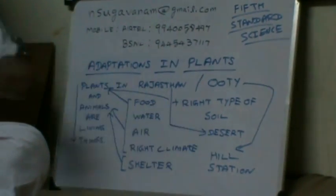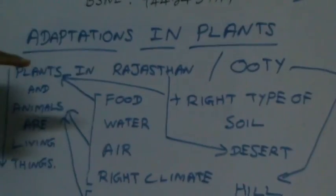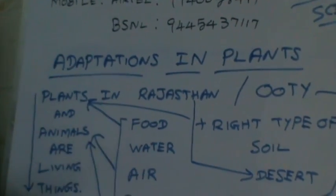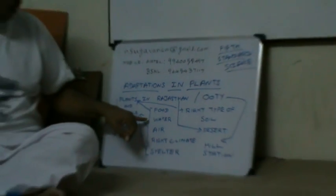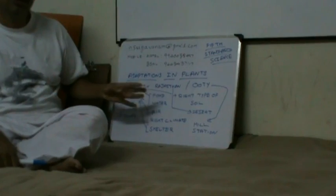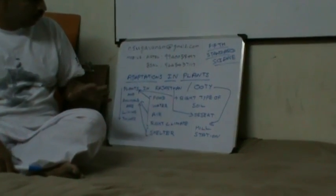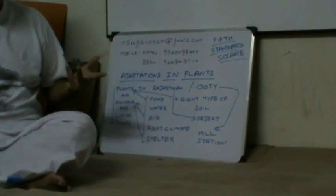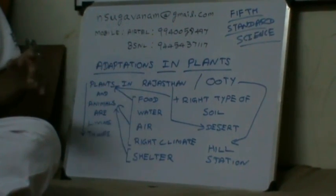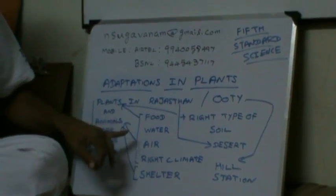Apart from this, for plants, we require a right type of soil. Plants usually grow on the soil. With the proper water, air is required for their breathing and also photosynthesis. Air contains lot of gases which includes oxygen and carbon dioxide. Carbon dioxide is required for photosynthesis for plants. Oxygen is required for breathing of the plants.